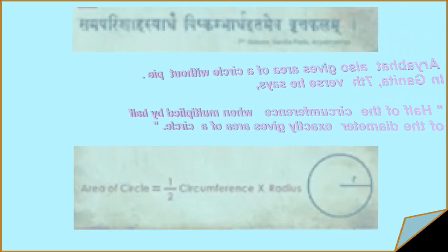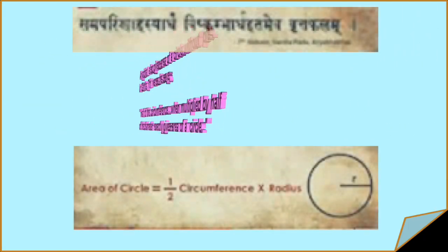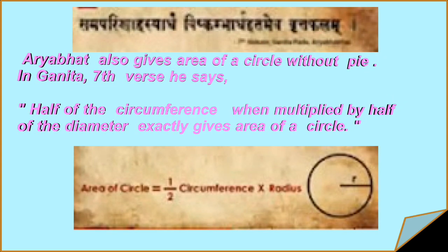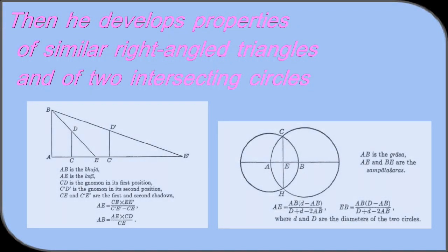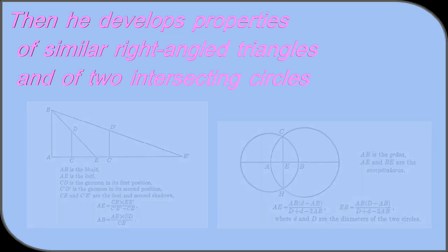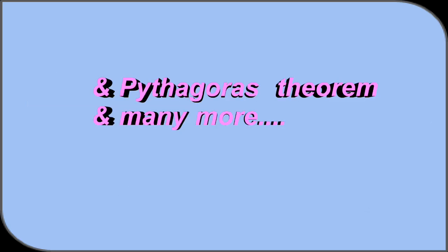Aryabhata also gives area of circle without pi. In Ganita 7th verse, he says: Half of the circumference, when multiplied by half of the diameter, exactly gives area of a circle. Then he develops properties of similar right-angled triangles and of two intersecting circles. In Pythagoras theorem and many more, Aryabhattiya is really Sagar Mein Sagar, sea in a pot.